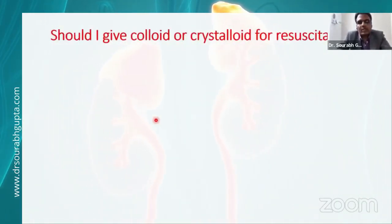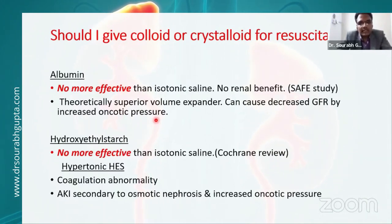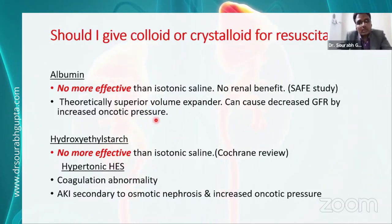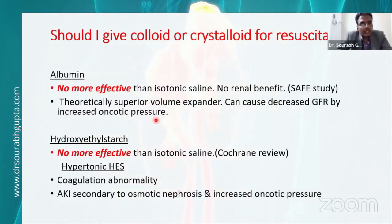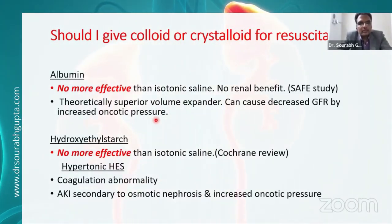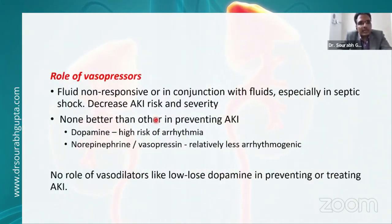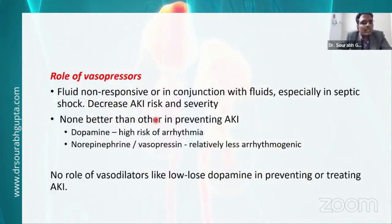Regarding whether colloid is better than crystalloid for resuscitation: evidence doesn't support this. Though theoretically albumin is a superior volume expander, it is not more effective than isotonic saline and there is no renal benefit according to studies. Theoretically albumin can also cause decreased GFR by increasing oncotic pressure. Hydroxyethyl starch is definitely more nephrotoxic, causing osmotic nephrosis and disturbing proximal tubular function. If the patient has sepsis and shock, vasopressors are required. Correcting blood pressure with vasopressors in a fluid non-responsive state decreases the risk and severity of AKI. No vasopressor is better than another in preventing AKI, but dopamine has higher risk of arrhythmia while norepinephrine and vasopressin are relatively less arrhythmogenic.